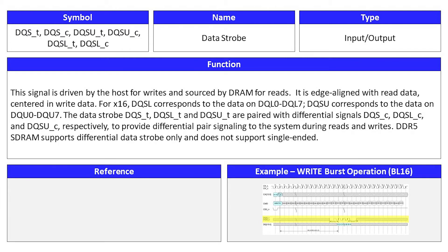The data strobe signal is an input and output signal. Its symbols are DQST, DQSC, DQSUT, DQSUC, DQSLT, and DQSLC. This signal is driven by the host for writes and sourced by DRAM for reads. It is edge aligned with read data and centered in write data. For BI16, DQSL corresponds to data on DQL0 to DQL7, and DQSU corresponds to data on DQU0 to DQU7. DQST, DQSLT, and DQSUT are paired with differential signals DQSC, DQSLC, and DQSUC respectively. DDR5 SDRAM supports differential data strobe only and does not support single-ended.